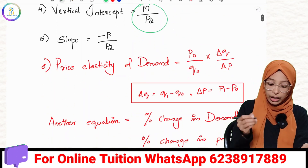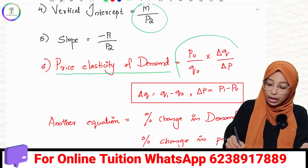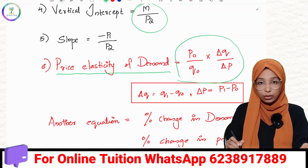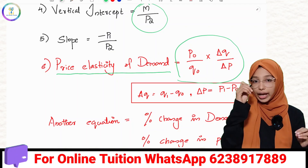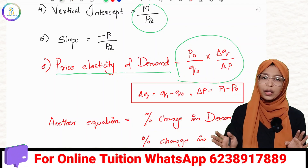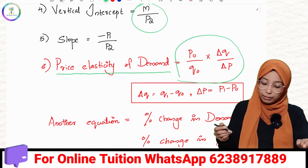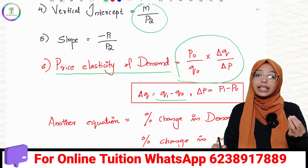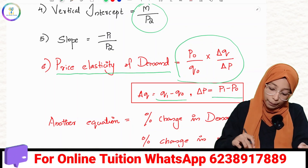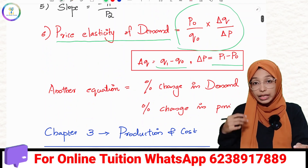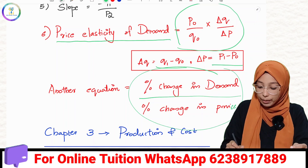We have an important equation: Price Elasticity of Demand. The equation is P0 by Q0 into ΔQ by ΔP, where ΔQ will be Q1 minus Q0, and ΔP will be P1 minus P0. The first form of the price elasticity equation is Percentage Change in Demand divided by Percentage Change in Price.